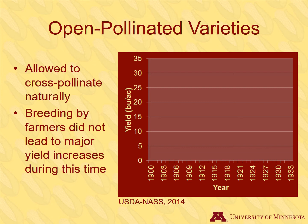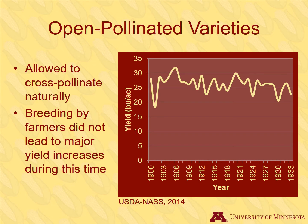Now we will discuss how the hybrid technique was developed. Open pollinated corn varieties were the predominant type grown in the U.S. until the mid-20th century. These varieties were allowed to cross-pollinate more or less naturally, and farmers saved seed from the best plants for planting the following year. Breeding using this method led to a plateau in yields — yields of open pollinated corn were in the 20 to 30 bushels per acre range for the beginning part of the 20th century.